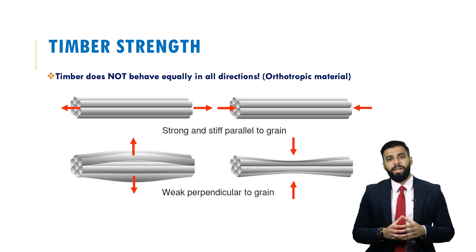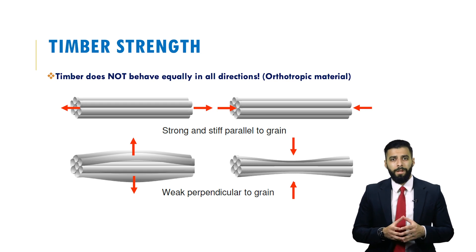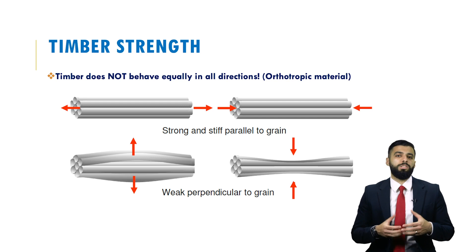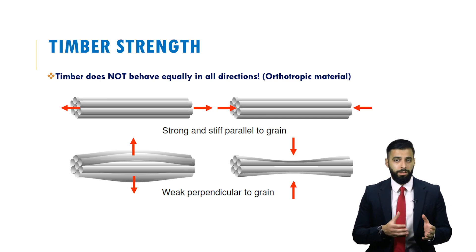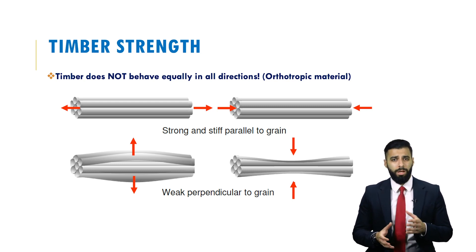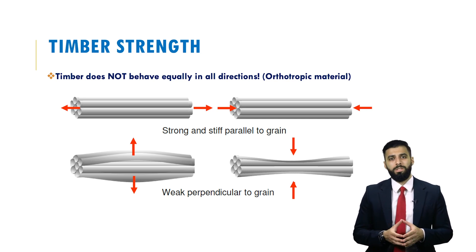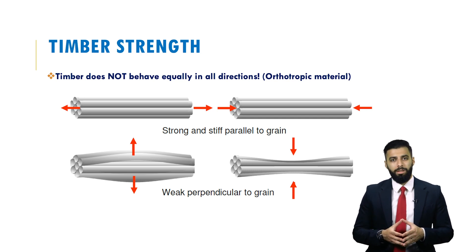One important point about timber is a characteristic related to strength: it is an orthotropic material. What that means is that it does not behave equally in all directions. It is strong and stiff parallel to the grain, yet weak perpendicular to the grain. This difference means you need to ensure that the timber is positioned in the right direction to achieve the maximum capacity for that material.